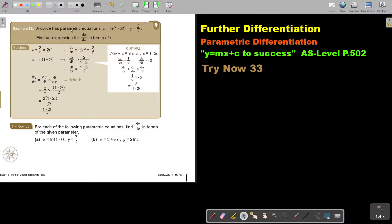Let's look at another example. A curve has parametric equation x equals ln(1 minus 2t), y equals 2 over t. Find the expression for dy over dx in terms of t. Now it's due to that ln that it's a bit more complicated.